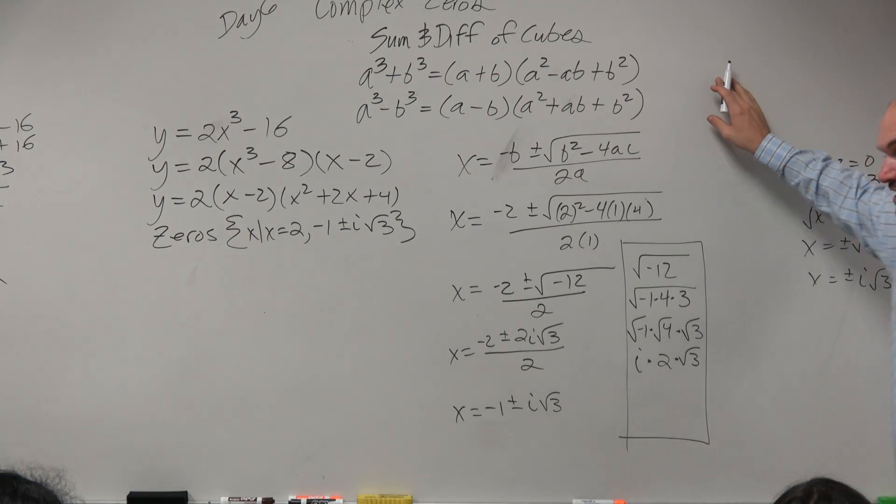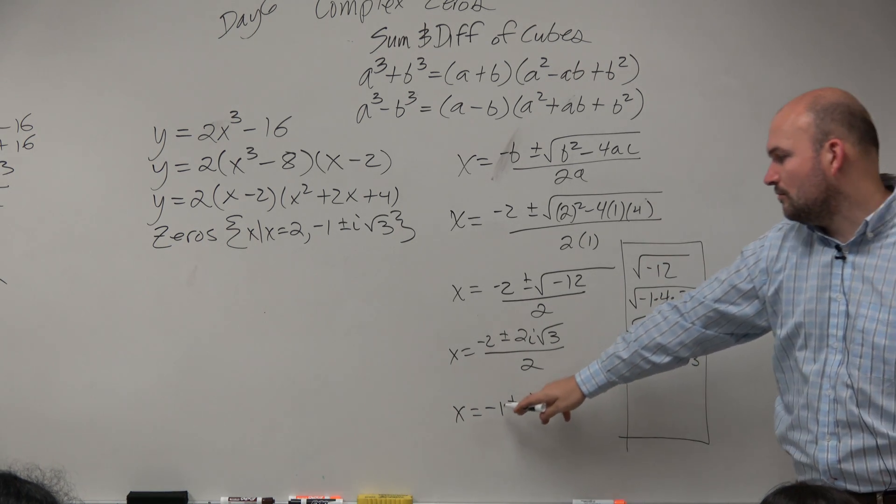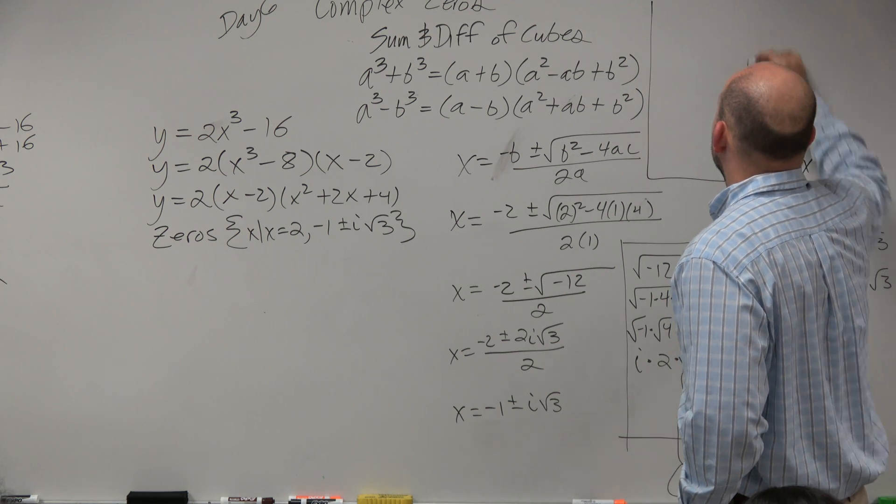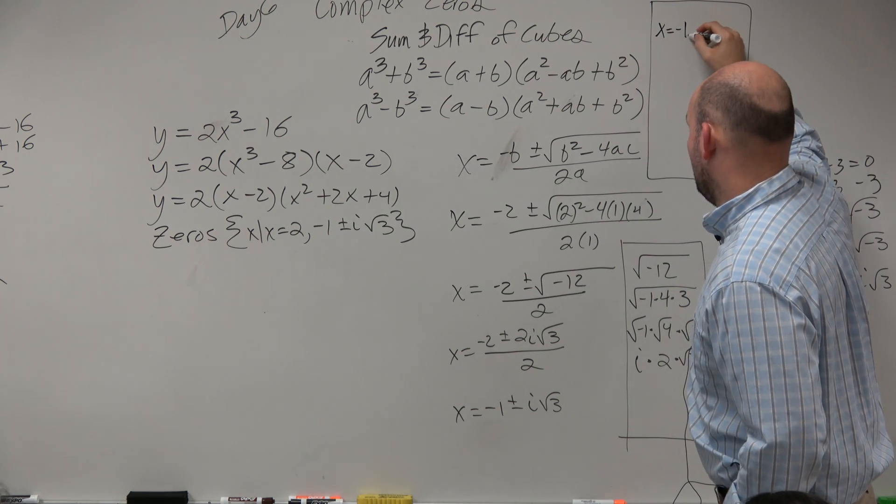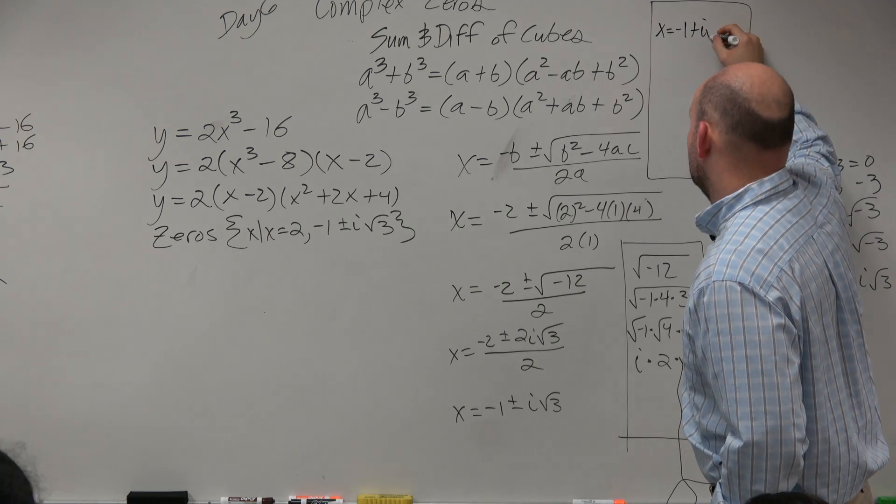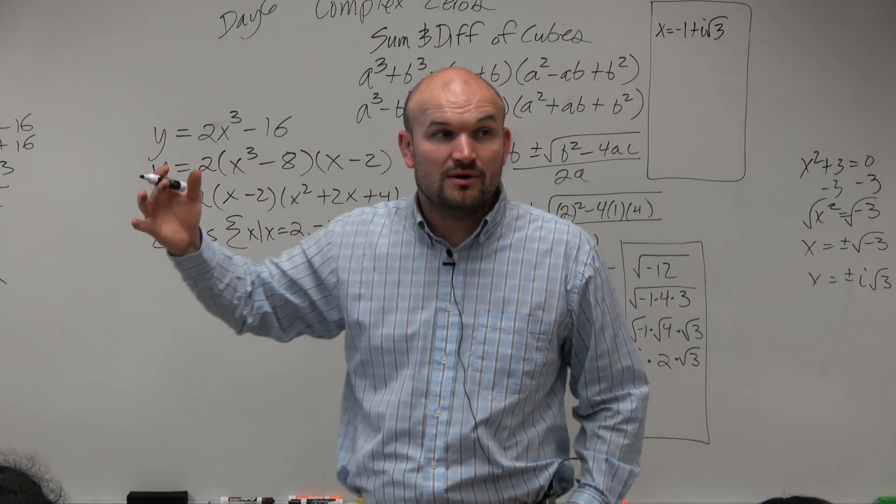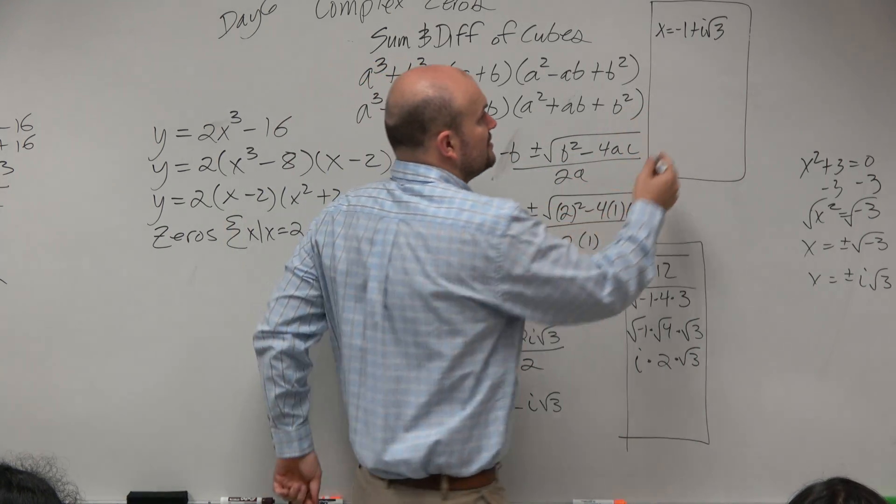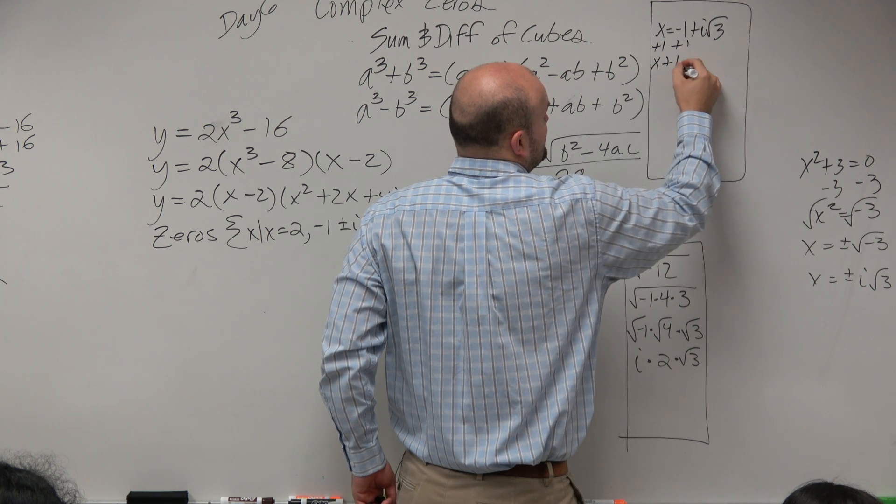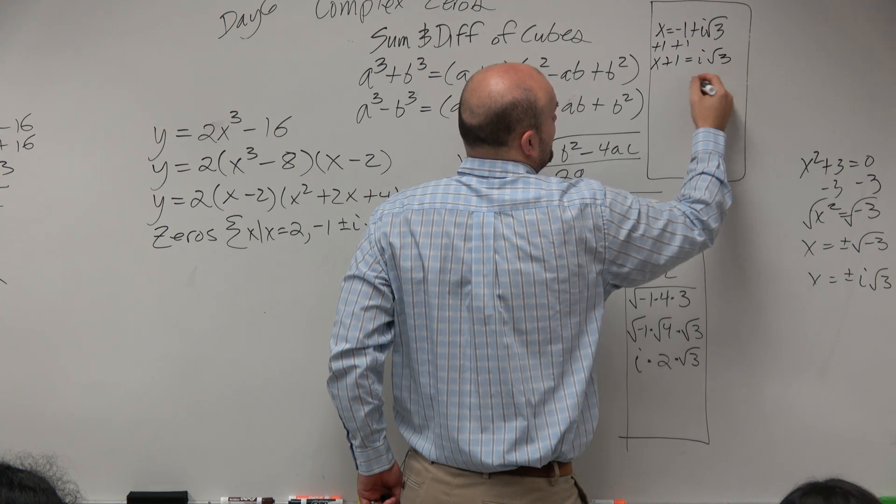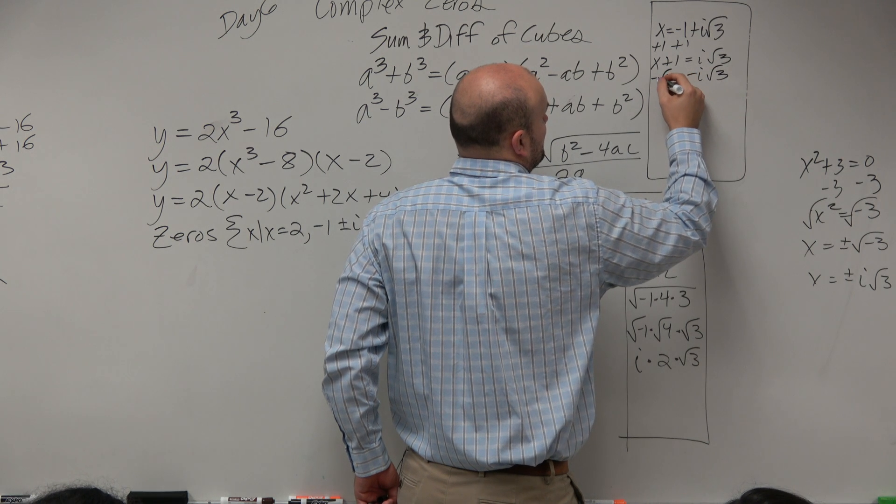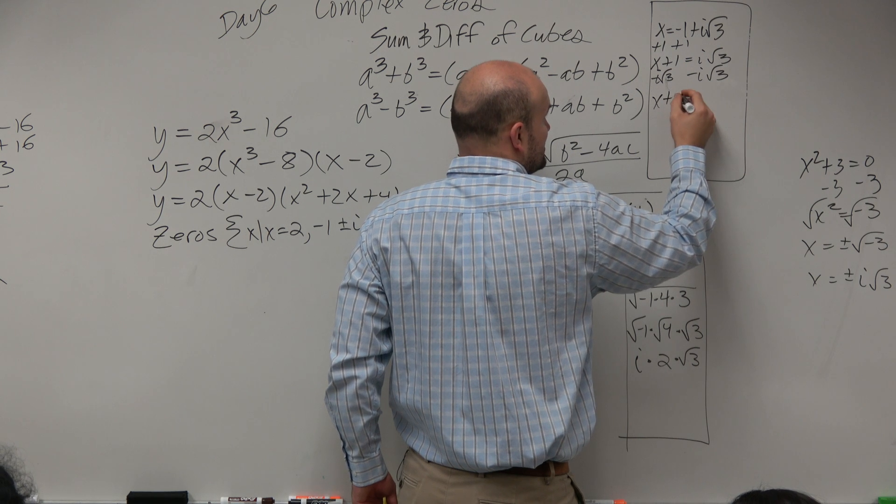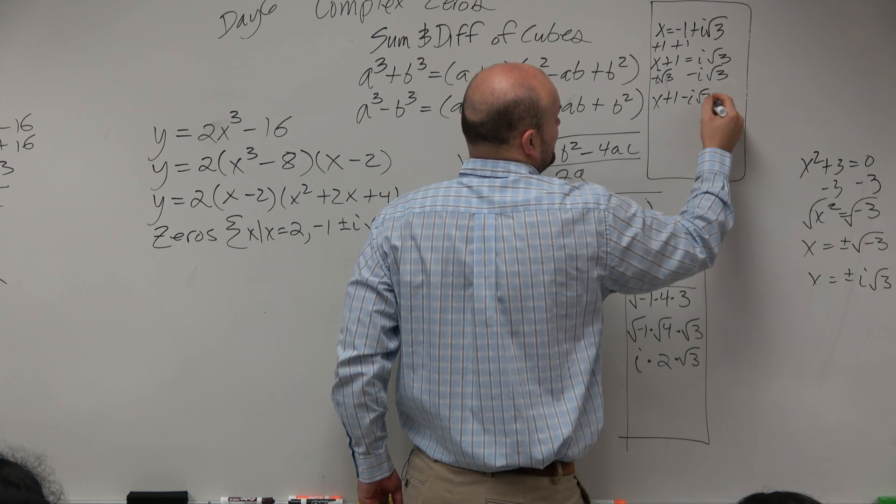But if you guys can just kind of remember, like if we want to go from here's the 0, how do we write the factor? So I'm just going to do 1. If I know that x equals negative 1 plus i times square root of 3 is a 0, how can I write this as a factor? All you guys got to do is set it equal to 0. So you'll add 1 to both sides. x plus 1 equals i square root of 3. Subtract that.